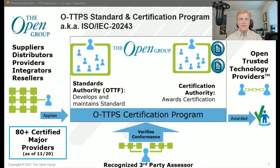Here's a diagram that depicts the standards and certification process. The standards authority is responsible for developing and maintaining the standard. The certification authority manages, maintains, and awards certifications. Any references to 'organization' refers to the technology provider seeking certification. Recognized third-party assessors must go through training to become certified themselves and are responsible for evaluating an organization's claim of conformance during the certification process. Once certified, an organization becomes a trusted technology provider and is placed into the certification registry for customer validation. You can determine how much information you want to externalize there. The certification authority provides certification and testing services — in this case, it will be The Open Group.